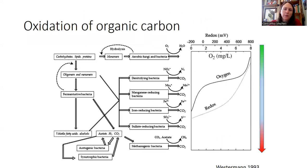Just a few more things as we wrap up decomposition. The oxidation of organic carbon involves several pathways: denitrifying bacteria take nitrate and turn it into nitrogen gas; manganese-reducing bacteria take manganese-4 and turn it into manganese-2; iron-reducing bacteria take iron-3 and turn it into iron-2; sulfate-reducing bacteria take sulfate and turn it into sulfide or sulfur gas. Each of these organisms also gives off CO2 through respiration as that happens. Aerobic fungi and bacteria eat the carbon and turn it into CO2.